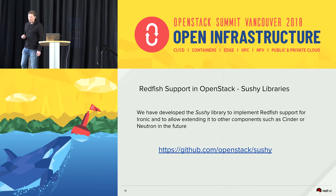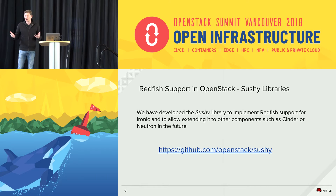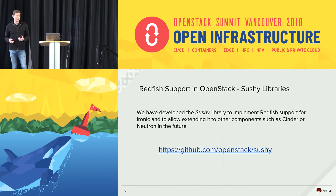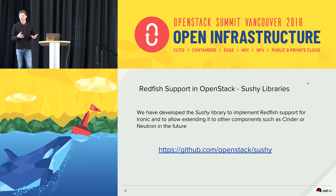OpenStack and Redfish — what have we done? With the release of Pike, we finished the work for a library we call Sushi, which is not only for Ironic. Ironic is hardware provisioning and management, so it's obviously the first project embracing this new protocol. But since you can do Redfish management of networks and storage as well, all the projects may want access to those functionalities. Because of that, it's more efficient to create a library such as Sushi, and we are the first consumers from the Ironic project.